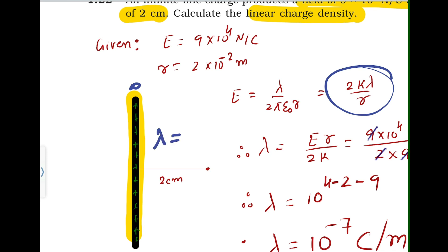Now, make lambda as the subject. You will get, just I am shifting the term, so r will be this side, right? So it is E into r by 2k.